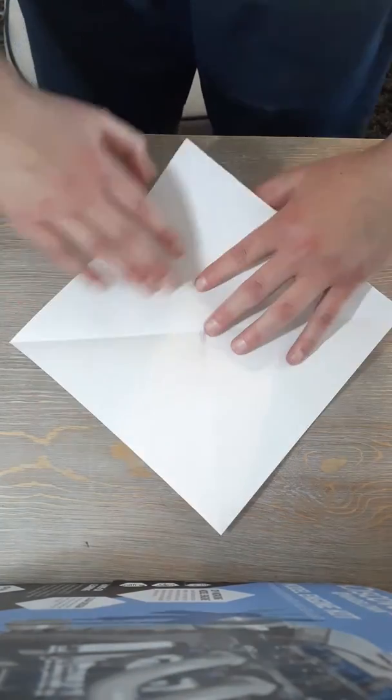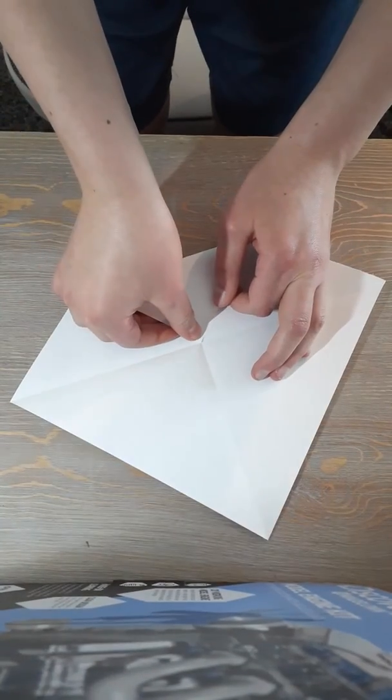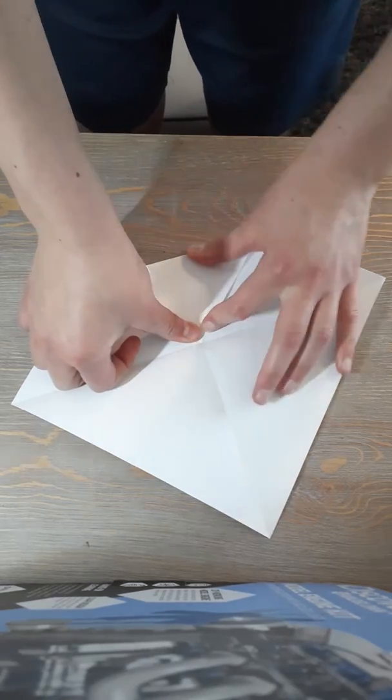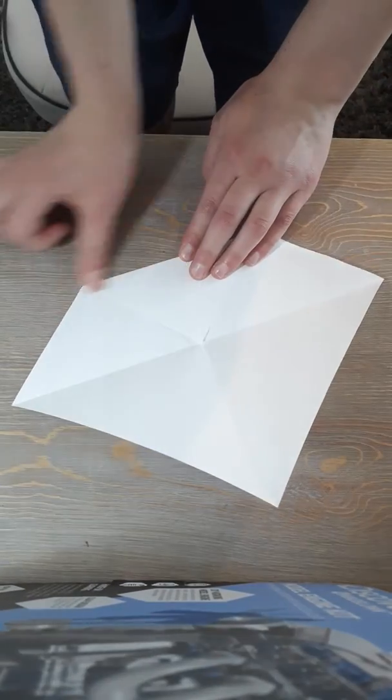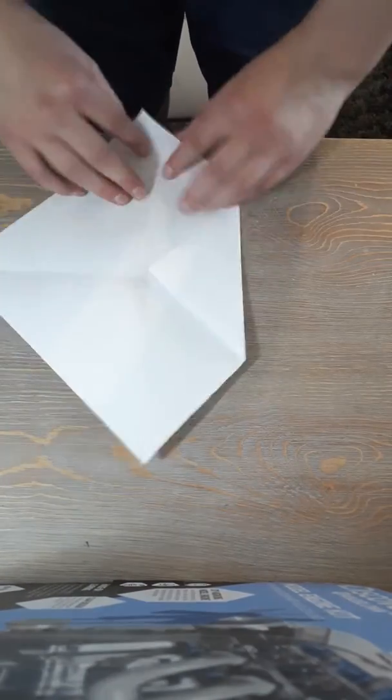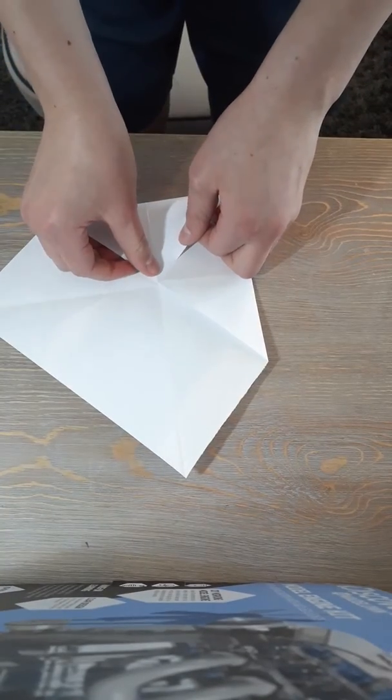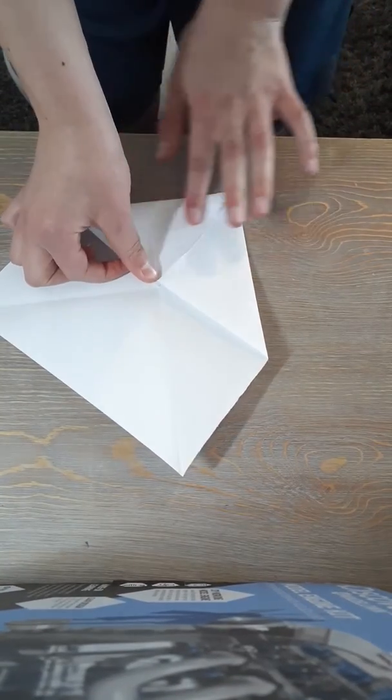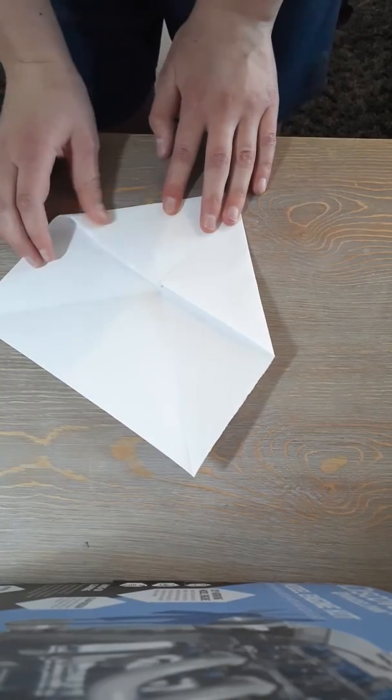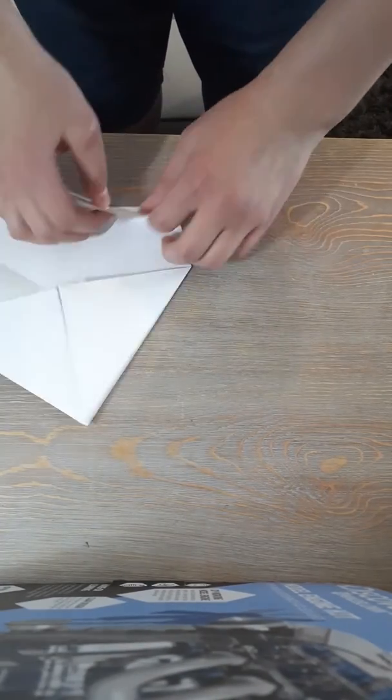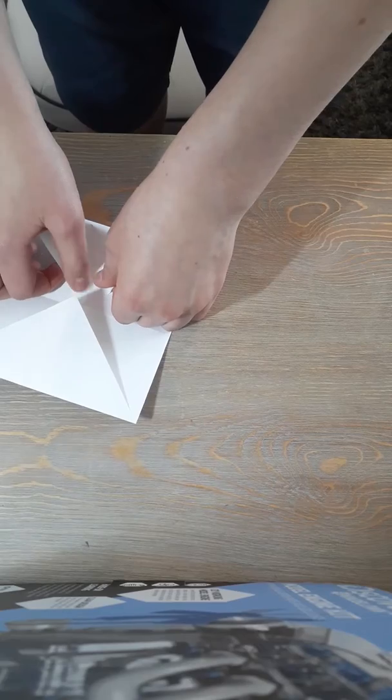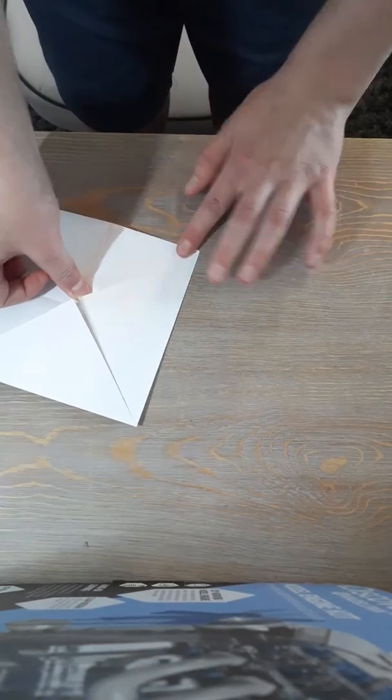You don't need to crease that good. Now, fold this corner in. You're going to do this to all four corners, so if you need to pause the video, just go ahead and fast forward. I'll put that a little bit more. Then you do this one, so it's going to look like an envelope when you are done.